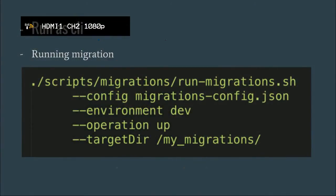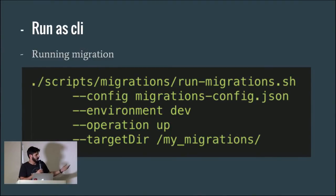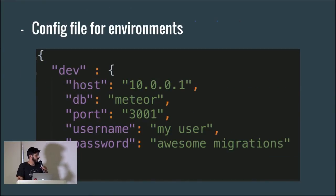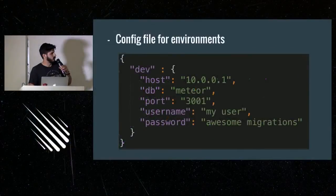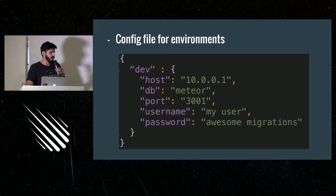The second script is run-migrations. It takes a configuration file where you can state your different environments, and you specify the environment you want to run the migration on, the operation (up or down), and the target directory for the migration scripts. This is an example configuration file — you can add whatever environments you want. One setup could be a staging app and a production app: you migrate your staging app and swap them around, giving users a seamless experience while updating.